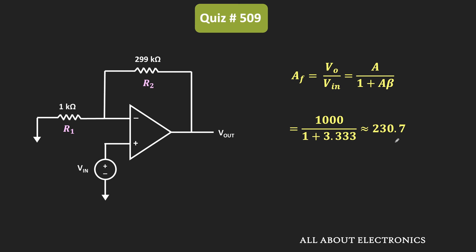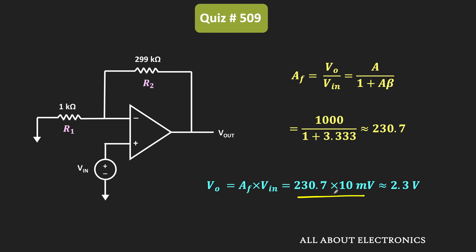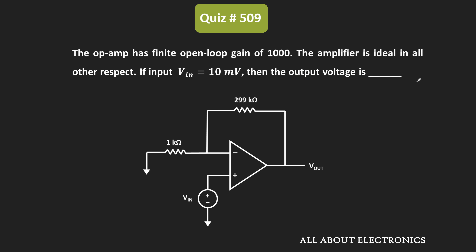With this closed-loop gain, the output voltage Vout is equal to AF times Vin. Here, the input voltage is equal to 10 millivolt. So the overall output voltage is equal to 2307 millivolt, or approximately 2.3 volt. Therefore, for the given op-amp circuit, the output voltage is equal to 2.3 volt.